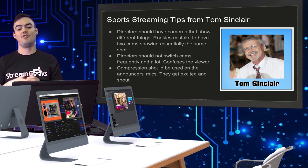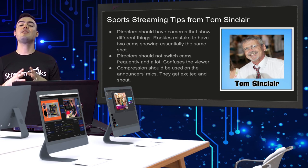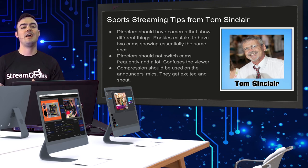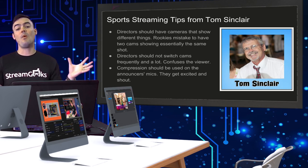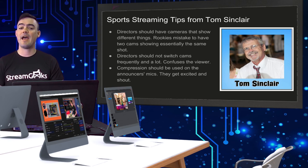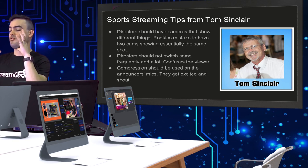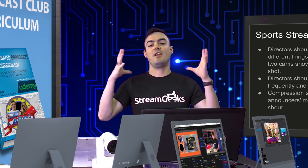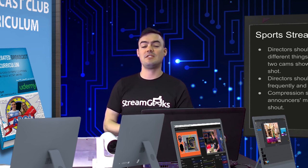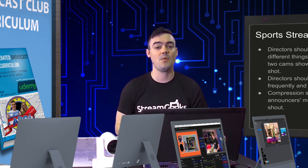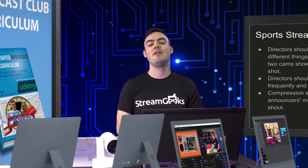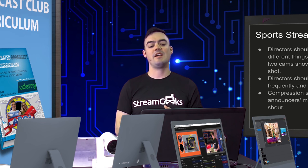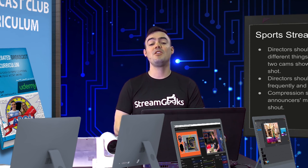For directors with multiple cameras: don't make the rookie mistake of having two cameras showing the exact same thing. Use secondary cameras to reveal additional details — one might be a wide shot and one might follow the play closely. If your cameraman loses the play, quickly cut to a wide shot so the audience can see what's happening. Also from Tom Sinclair: don't switch cameras too frequently, but do have a backup wide-shot camera ready when following a play in case you lose it.